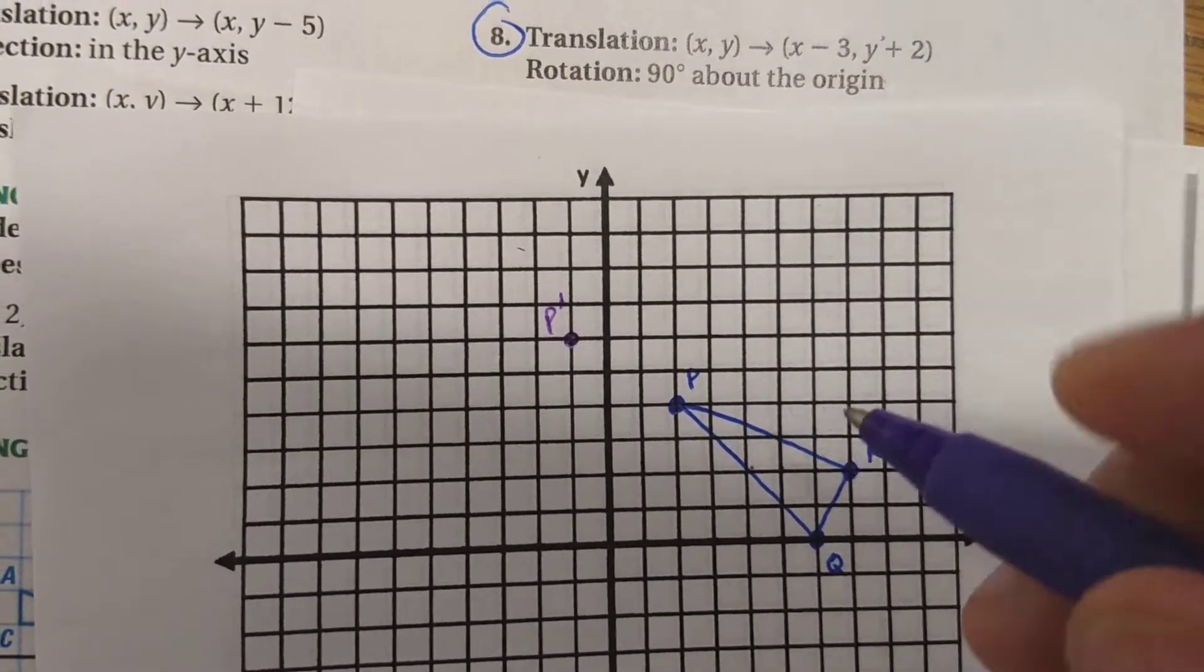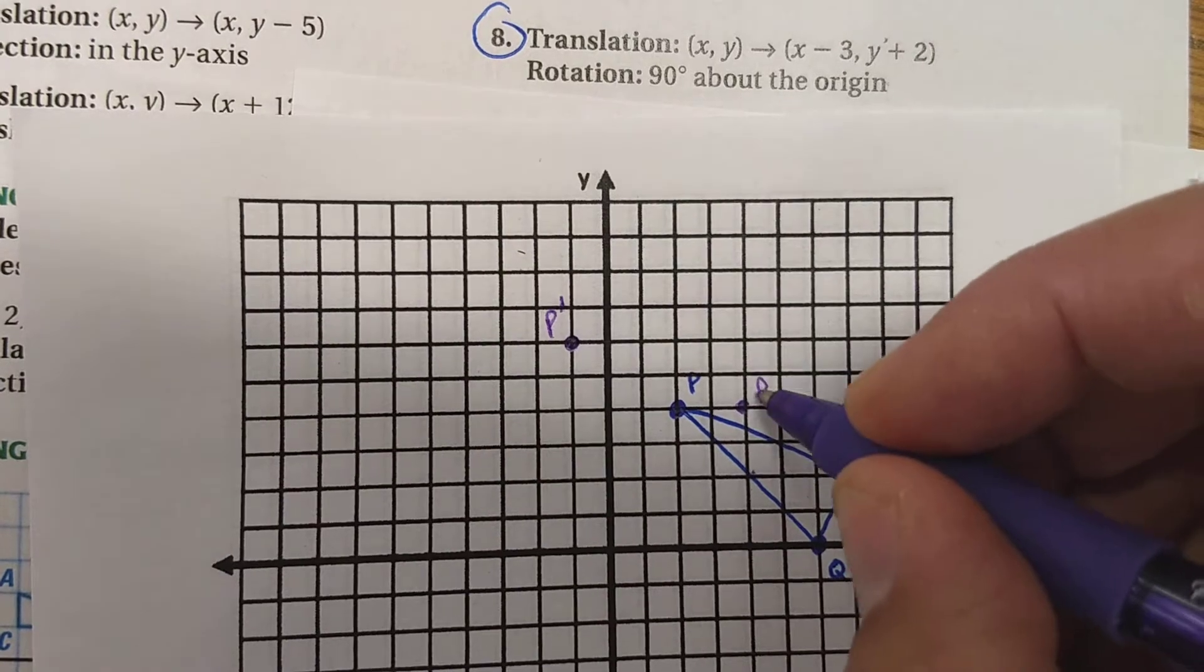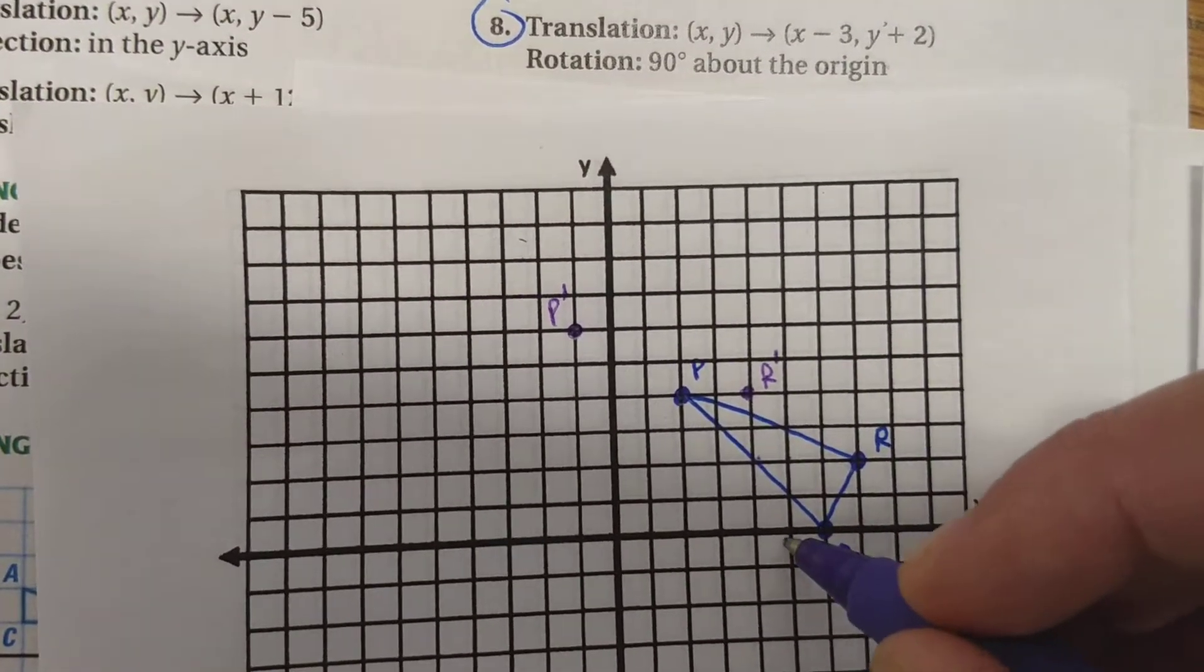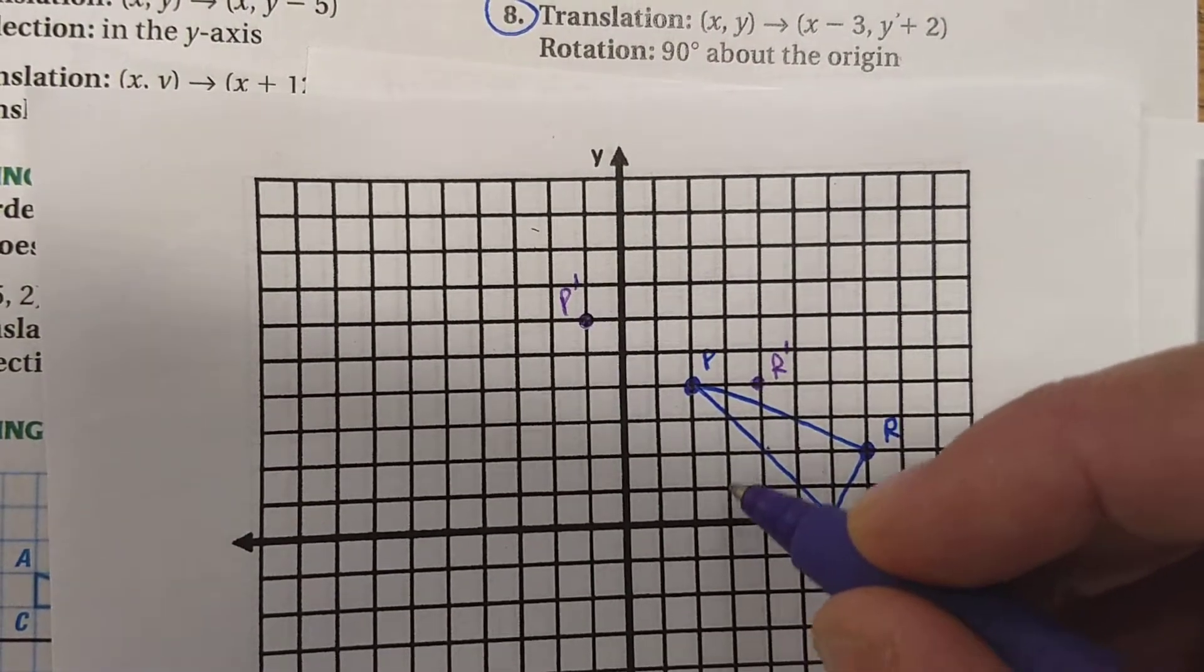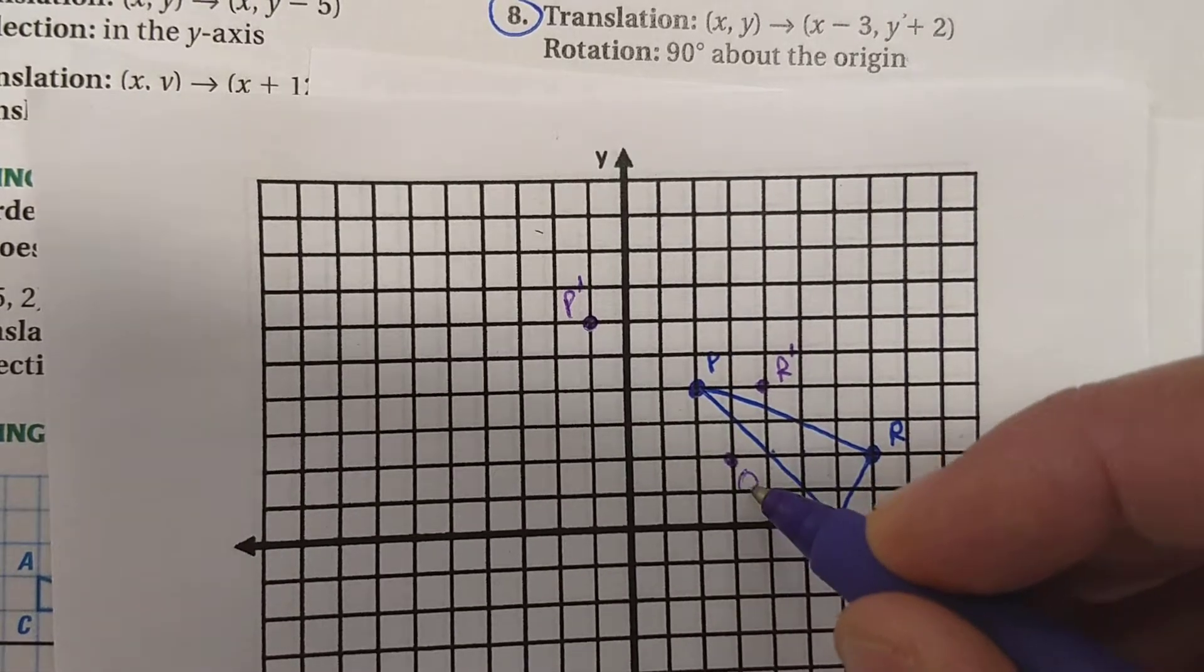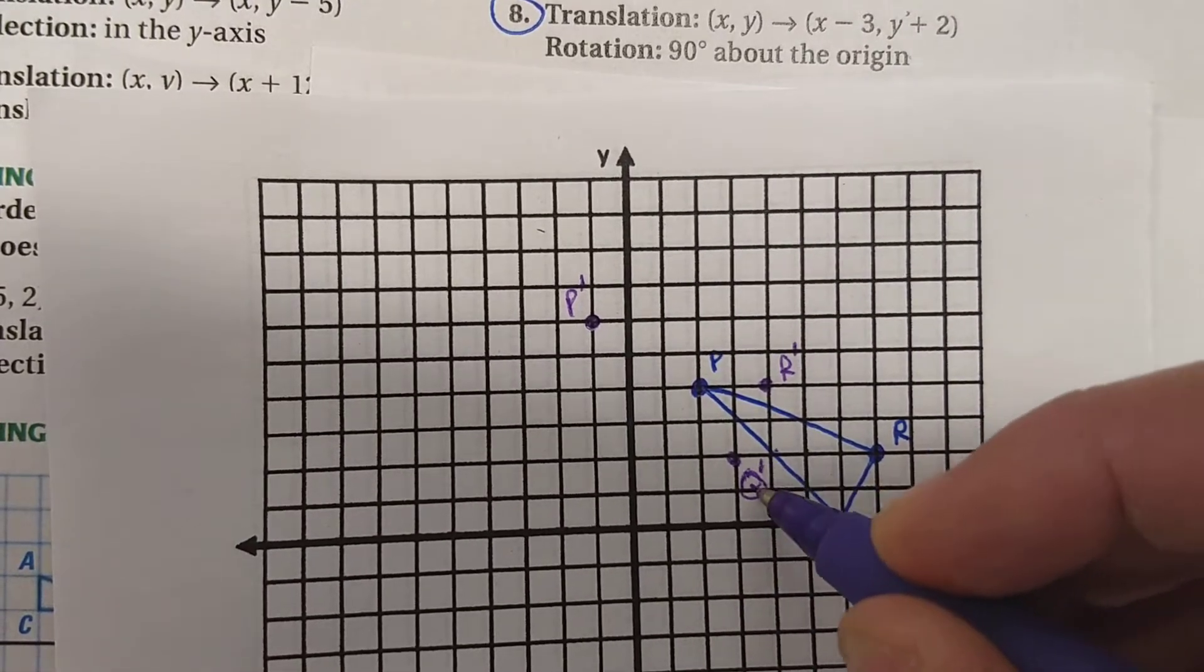So 1, 2, 3 over, 2 up. That gives me an r prime. 1, 2, 3. 1, 2. There's my q prime. Oops, q prime.